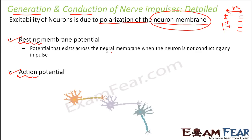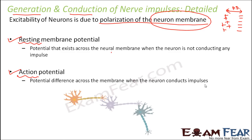Resting membrane potential exists across the neuron membrane when the neuron is not conducting an impulse, and action potential exists when it is conducting impulses. To understand this fully, we first need to understand the neuron membrane structure, then resting membrane potential, then action potential, and finally how these potential differences help in generation and conduction of nerve impulses.